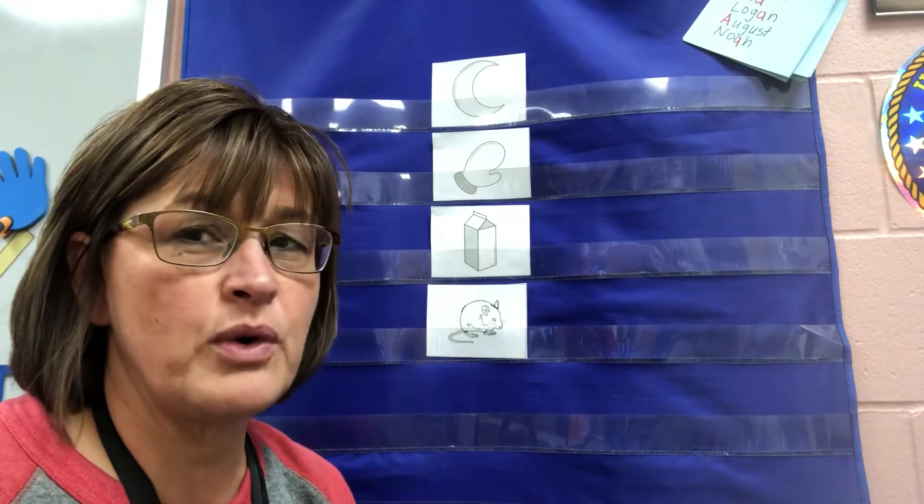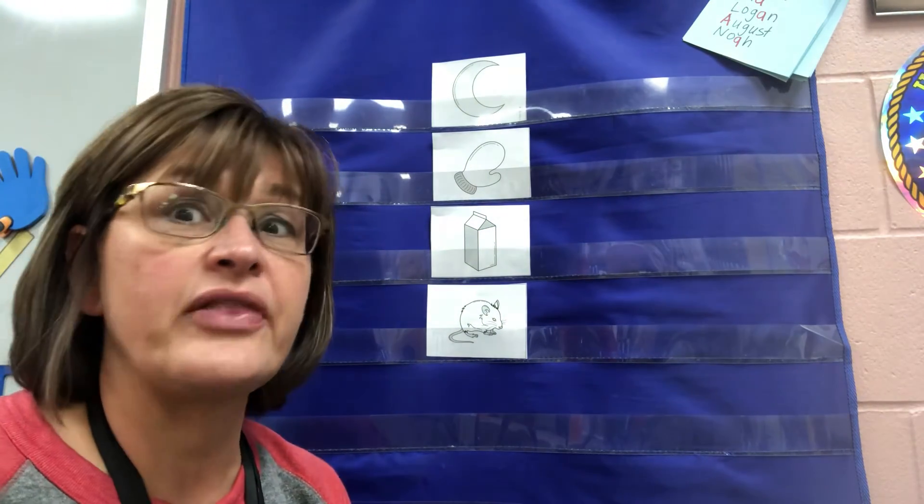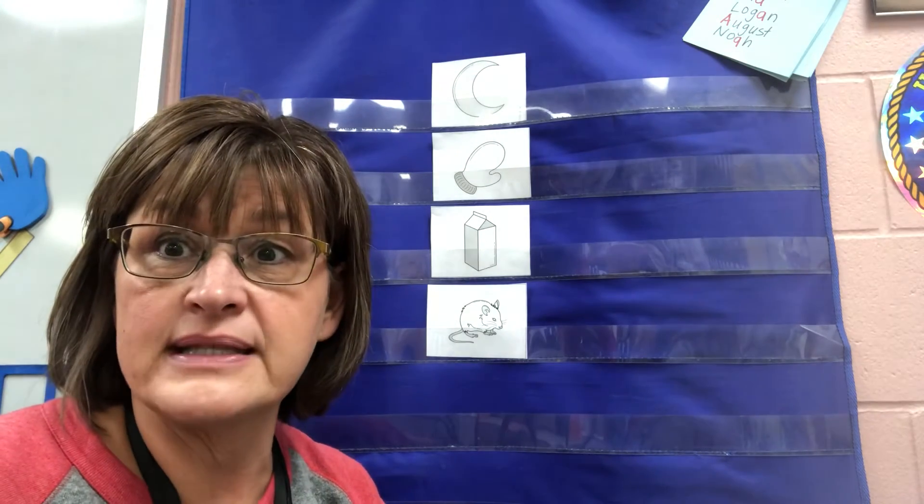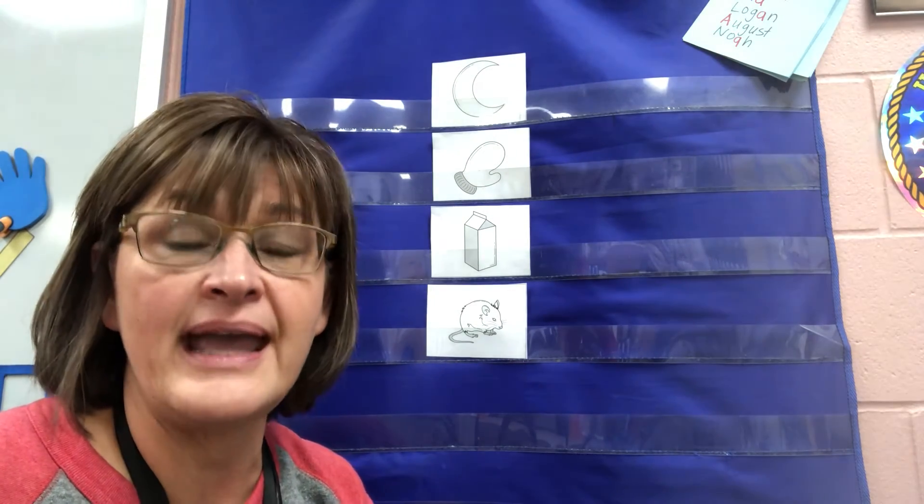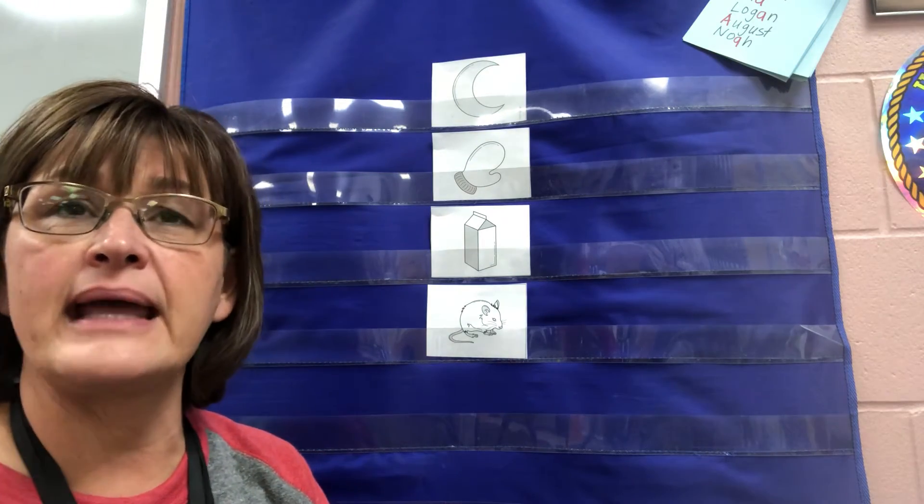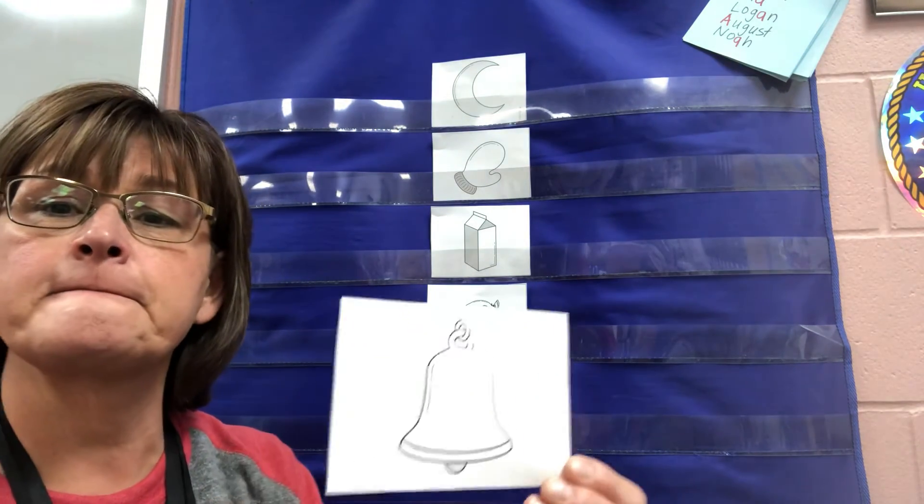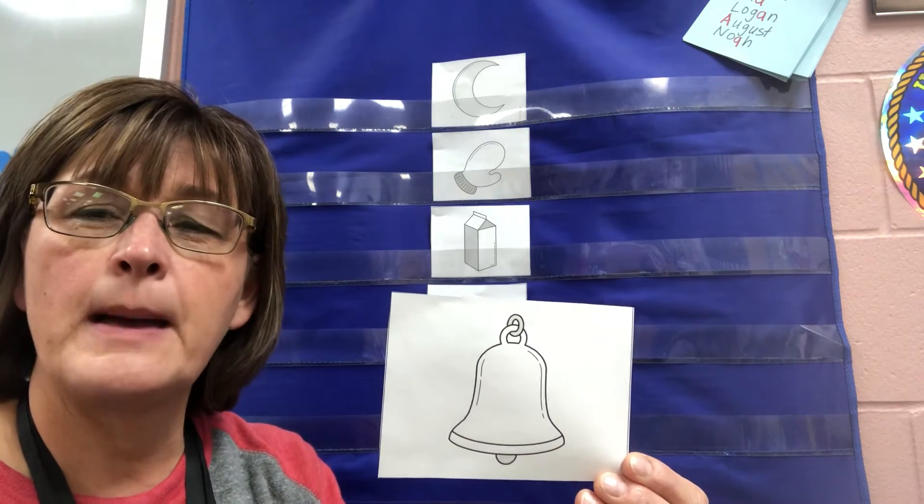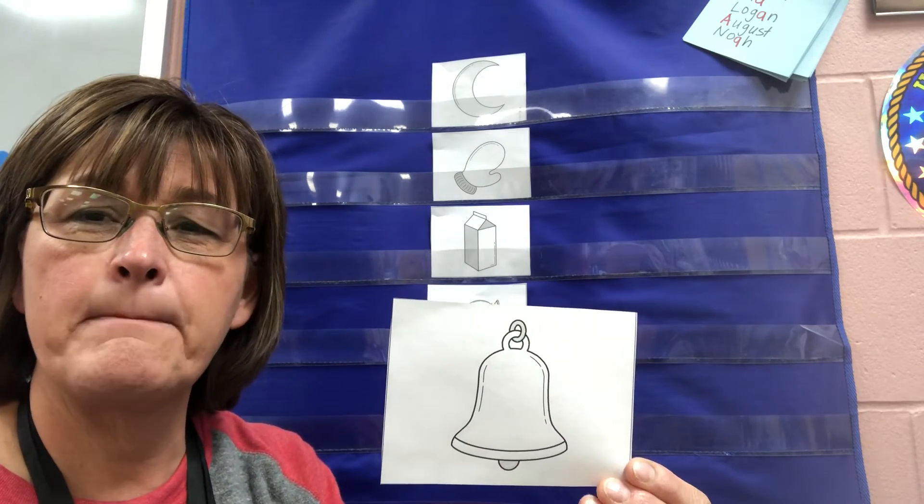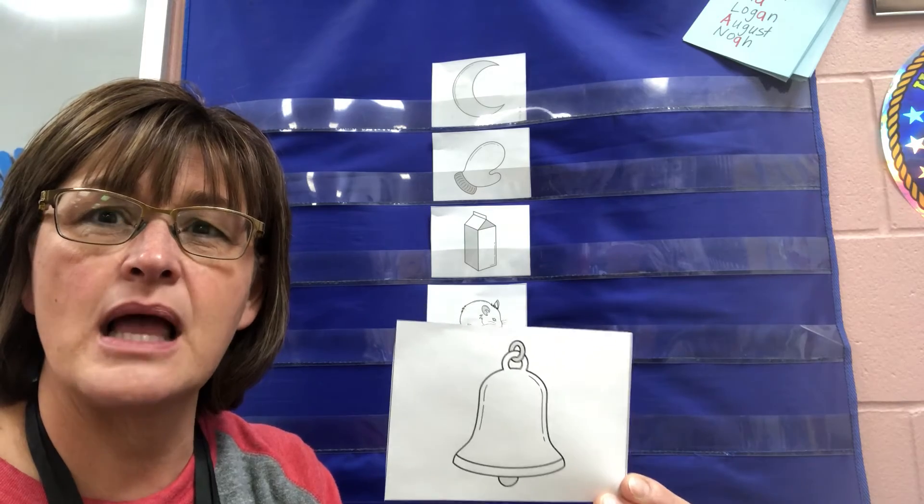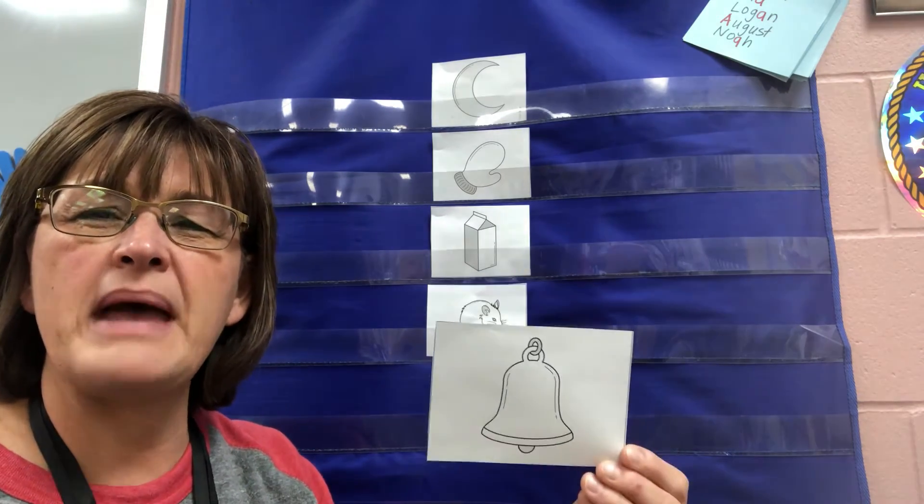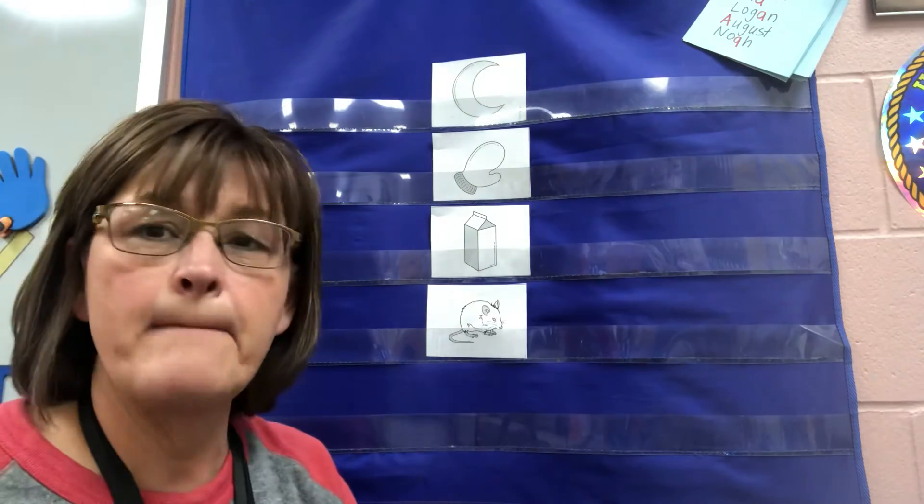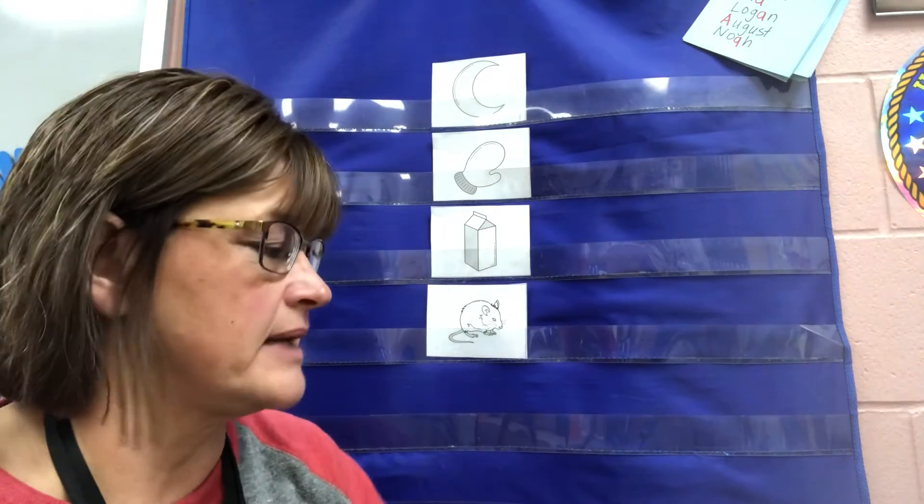I've got one more for you that we'll play together. Then you'll have all these pieces at home and you can play the same game. Okay. Let's take a peek at my last picture card. Bell. Bell. Bell. Bell. Moon. Bell. Mitten. Nope. Buh. Buh. It's a B isn't it?